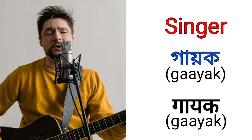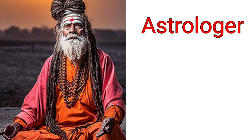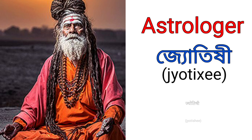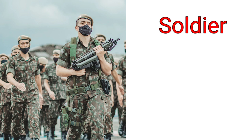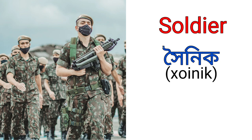Astrologer is called Jutihi in Assamese and Jyotishi in Hindi. Soldier is called Khoinik in Assamese and Sainik in Hindi.